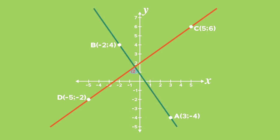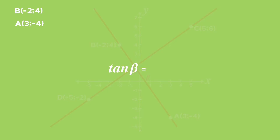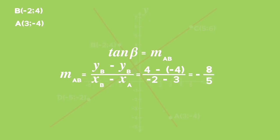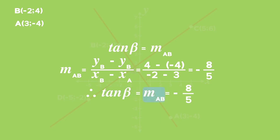The angle that line AB makes with the positive x-axis is beta. To calculate this angle, tan beta equals the gradient of AB. The gradient of AB equals y_B minus y_A, all divided by x_B minus x_A. Substituting the coordinates, we get 4 minus negative 4, all divided by negative 2 minus 3. This equals negative 8 divided by 5, therefore tan beta equals the gradient of line AB, m_AB, equals negative 8 divided by 5.